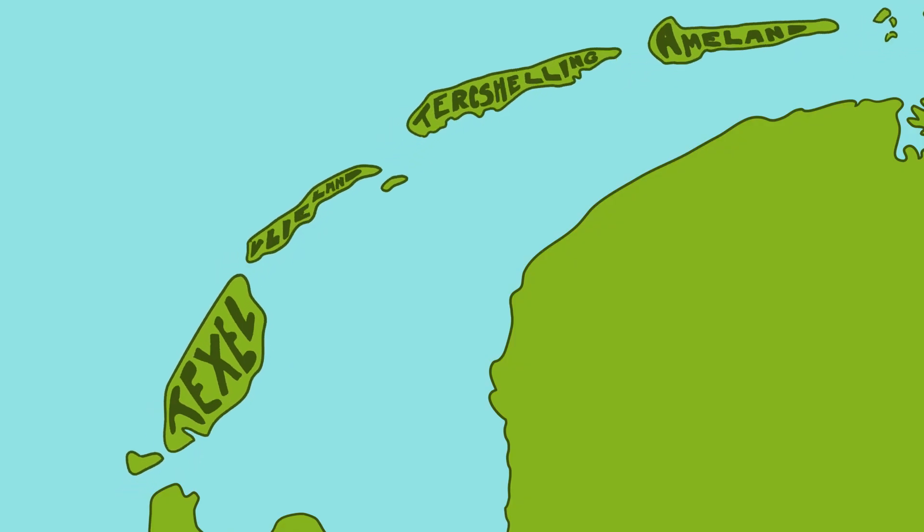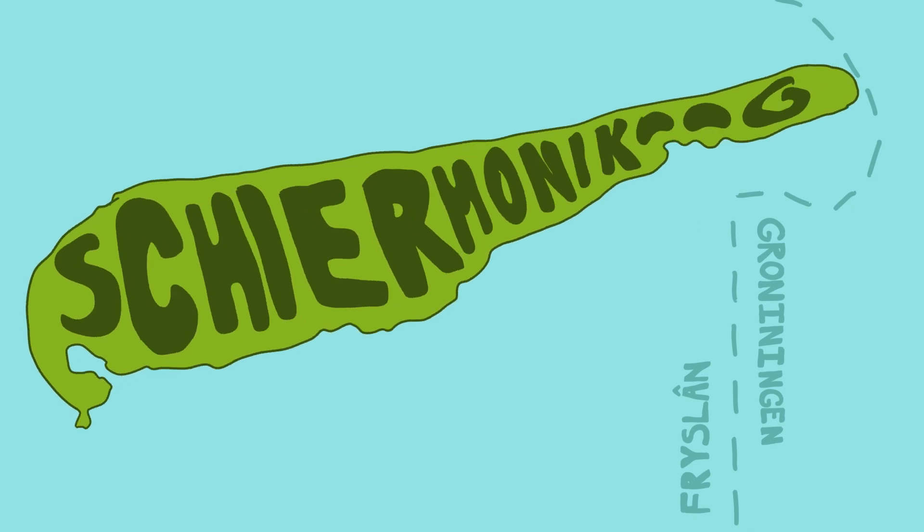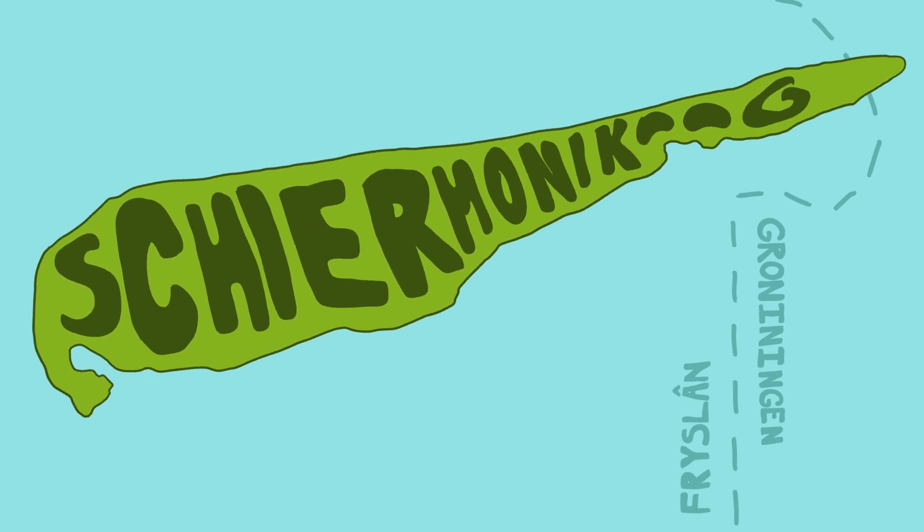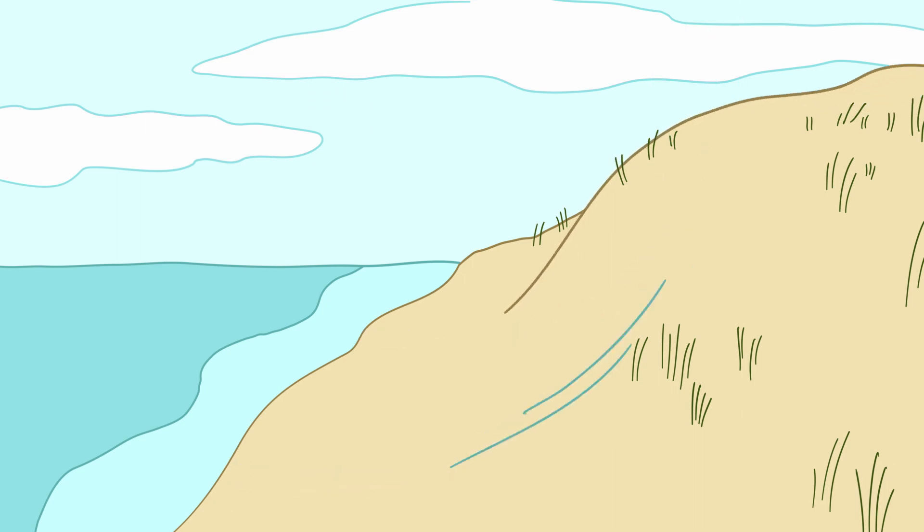Barrier islands, such as Ameland, tend to wander—erosion on one end, accretion on the other. The island of Schiermonnikoog has already crossed the border from one province to the next. To keep islands in place, the Netherlands introduces millions of cubic meters of sand at the eroding end and relies on currents and waves to nourish beaches while winds lift sand onto the dunes.